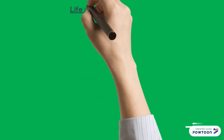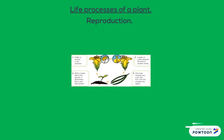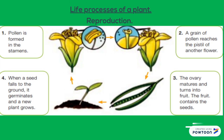I am going to explain how plants reproduce. First, pollen is formed in the stamens. Second, a grain of pollen reaches the pistil of another flower. Then the ovary matures and turns into fruit. The fruit contains the seeds. And finally, when a seed falls to the ground, it germinates and a new plant grows.